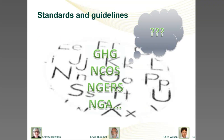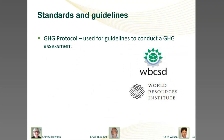A lot of acronyms are bandied about — we often hear things like GHG Protocol, NCOS, ENGERS, and NGA. What are the main ones a business should know about and how do they fit together? Well, the main one is the GHG Protocol — that's pretty much fundamental. It's the internationally recognised standard for conducting these sorts of assessments, and it's developed by the World Business Council for Sustainable Development and the World Resources Institute, using expertise from both the financial and technical sectors.